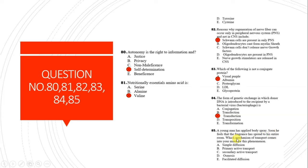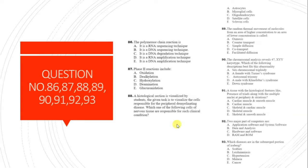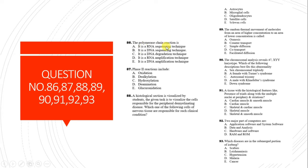Question 85: A young man sprays body spray and the freshness spreads throughout the room. Which mechanism of transport does this represent? This is simple diffusion.